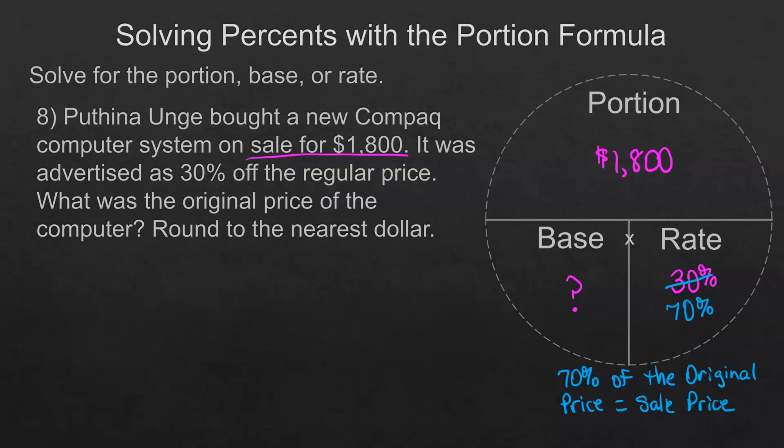To find our answer, we're going to take $1,800 and divide it by 0.7. That gives us $2,571.43. But it said to round to the nearest dollar, so we will just round that to $2,571. Just pay attention to the rounding so that if you are told to round in a different way, you don't miss that. If you're putting answers on Connect and you don't round it properly, it's going to be counted wrong. So you want to be careful with that.